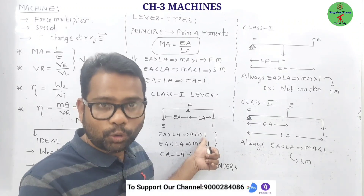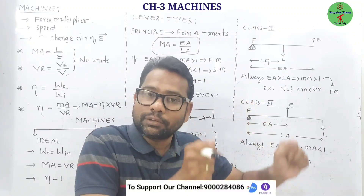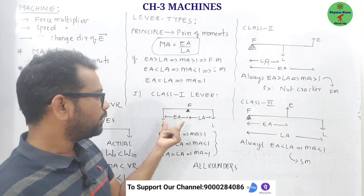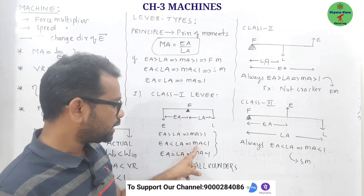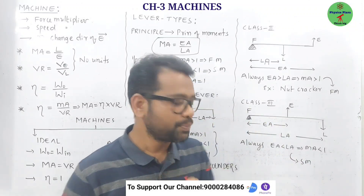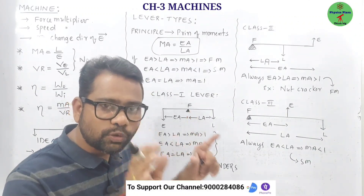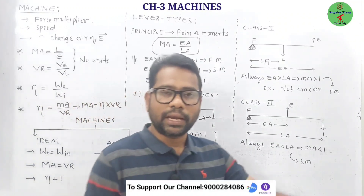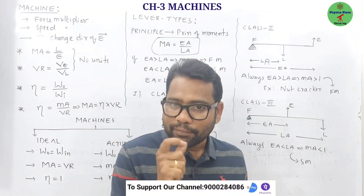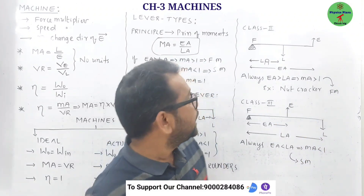Examples of class one levers acting as force multipliers include a crowbar, shears used to cut plants, and a metallic cutter. If the fulcrum is taken towards the effort, then effort arm is less than load arm, giving mechanical advantage less than 1 — for example, scissors used to cut cloth act like speed multipliers. If the fulcrum is exactly in the middle, mechanical advantage equals 1. So class one levers are all-rounders — they can act as force multipliers, speed multipliers, or change the direction of effort. However, one machine cannot be both simultaneously.